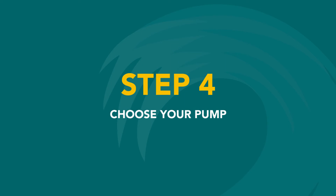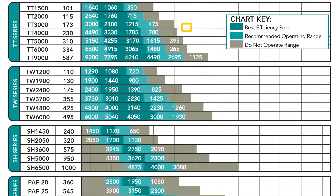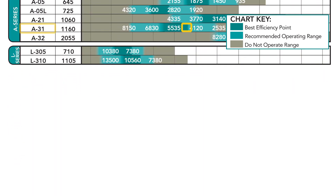Now that we know the total work the pump needs to do, we can find the right pump for our application. Using the TDH chart, we'll run down the line corresponding to 12 feet of total dynamic head for 3-inch tubing until we find a pump that gives us the flow we want, operating in the dark blue area — the best efficiency range for that pump. In this application, the TT9000 will provide optimal flow of 5,625 gallons per hour at 12 feet of TDH for only 587 watts. Through 2-inch tubing at 23 feet, we would need to jump to a direct drive pump that draws double the watts.